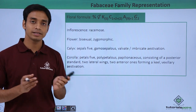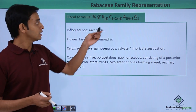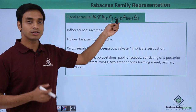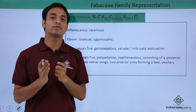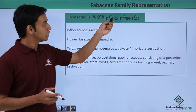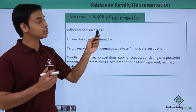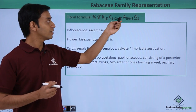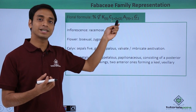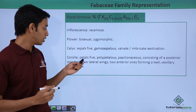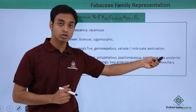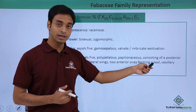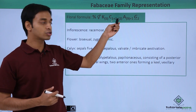Now let's see the corolla. The corolla is five petals: one plus two plus two equals five. First, there is one single standard petal, which is the largest. Then there are the next two petals known as the wings. Then the last two smaller petals are in fused form, represented in brackets. This polypetalous papilionaceous corolla consists of a posterior standard, two lateral wings, and two fused petals forming a keel, following vexillary aestivation.